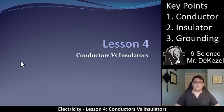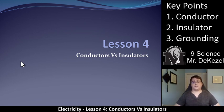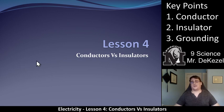We have a third key point, which is grounding or electrical discharge. Sometimes that's a safety mechanism, like the third prong in the outlets. Old houses often don't have the third prong in their electrical outlets, but the third prong is a grounding wire, so they're very, very important. So we're going to talk about conductors, insulators, and grounding of materials.